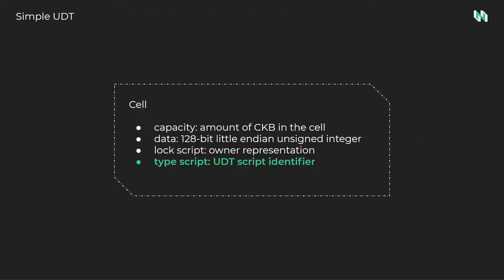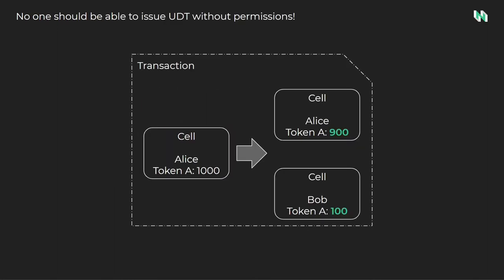Next we'll look at an example of how to implement a UDT on-chain script. In a UDT transfer, Alice has 1,000 of token A and wants to send 100 to Bob, keeping 900 for herself. The input cell has 1,000 tokens and the output cells combined have a total of 1,000 tokens — this transaction is valid. In an invalid example, Alice tries to send 500 to Bob and keep 900 — the input is 1,000 but outputs total 1,400, meaning additional token minting would be required. Under normal circumstances, a user is not allowed to mint tokens out of nothing, so this transaction is invalid and would be rejected.